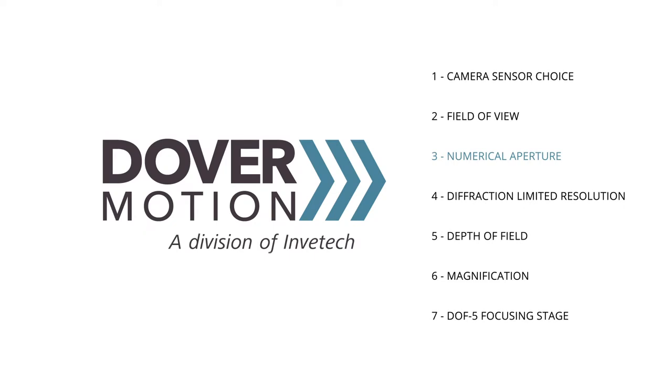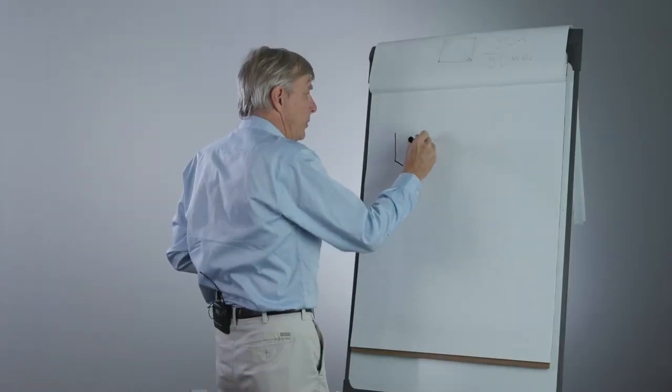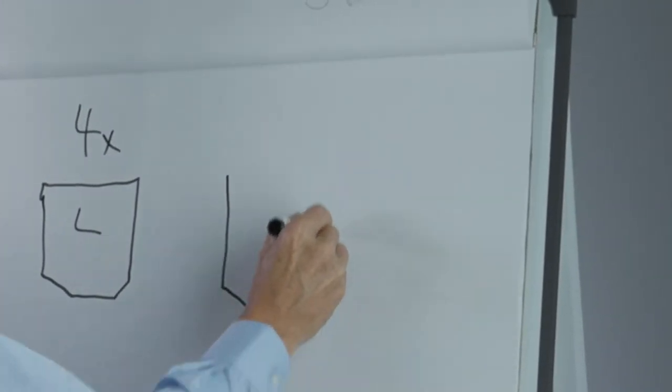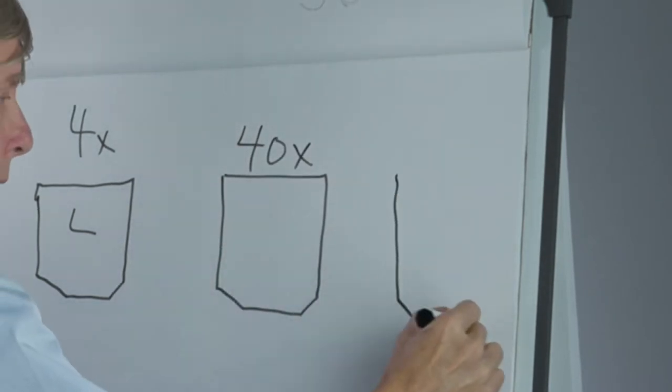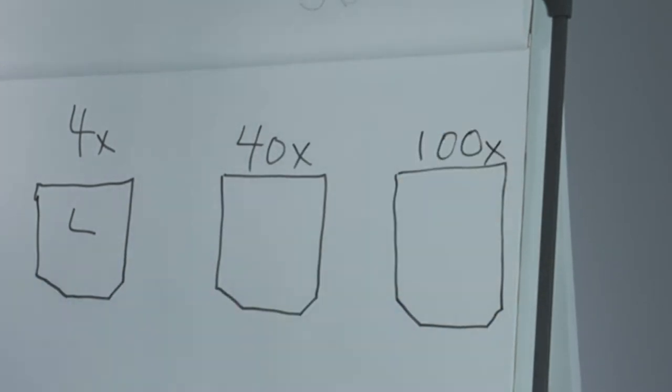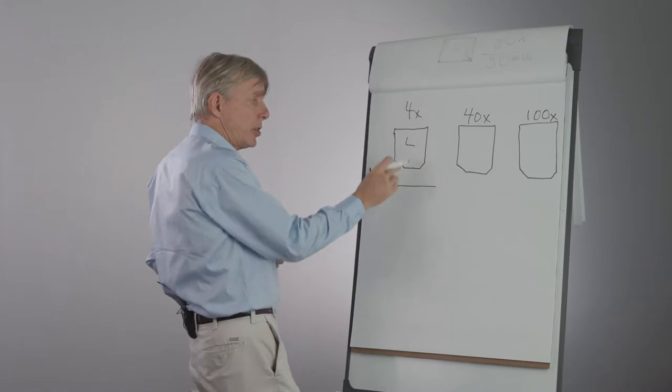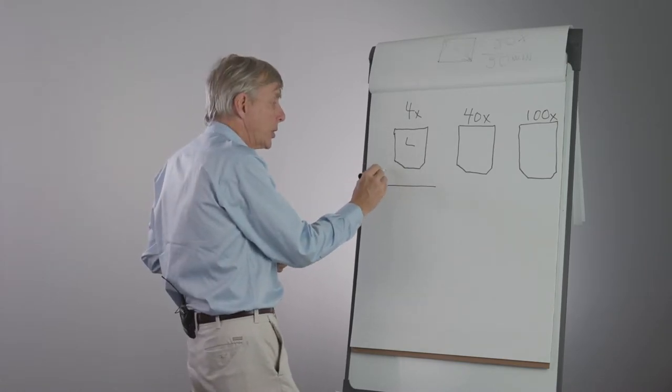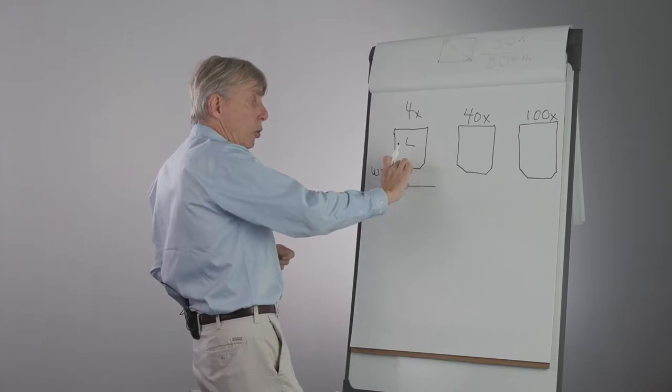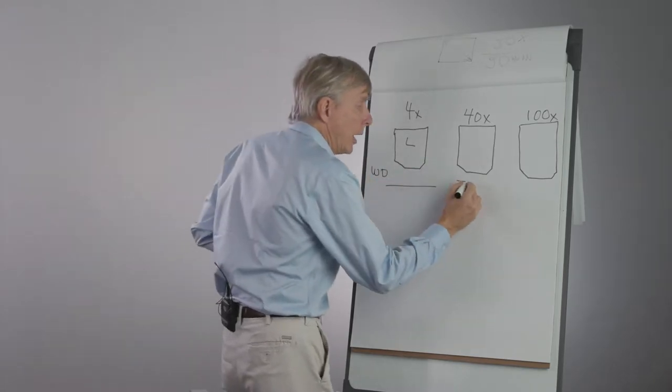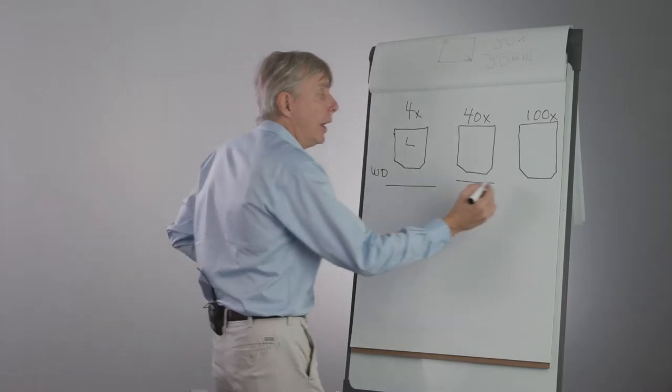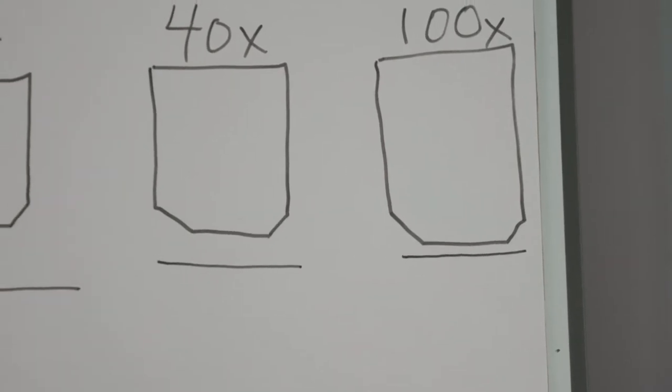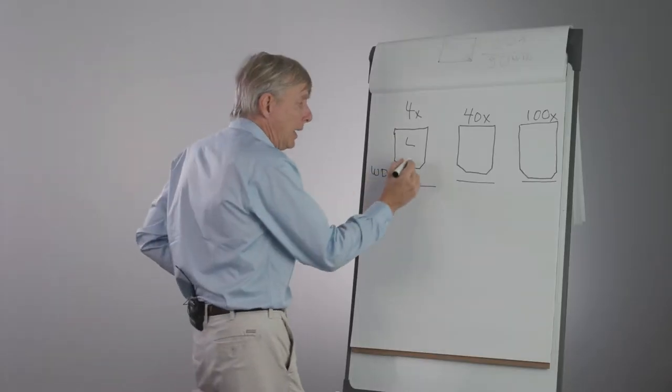I'll draw a variety of microscope systems. These are objectives. Low power, 4x. Medium power, 40x. And high power, 100x. Here is the sample. And generally speaking, the distance from the end of the objective to the sample, which is called the working distance, is going to be long on a low power objective, less on a higher power, and very fine, possibly a fraction of a millimeter in the high power system.